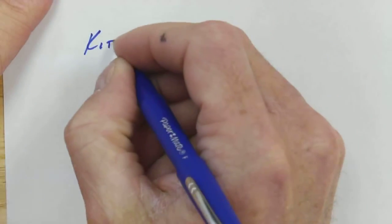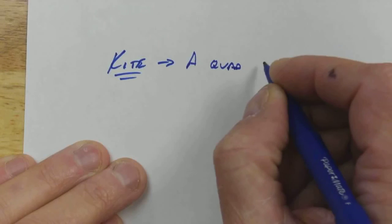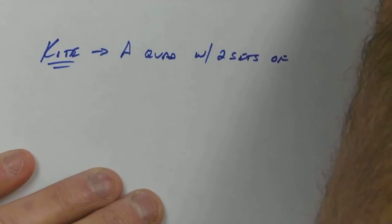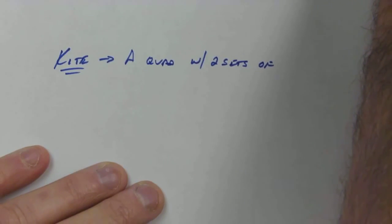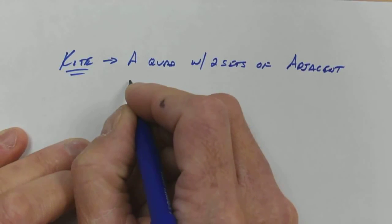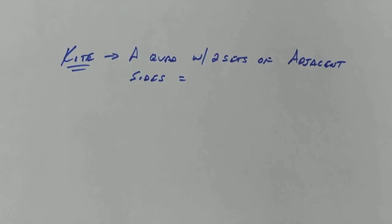Here we go, kites. Let's do our definition of a kite and properties of a kite. A kite is a quadrilateral with two sets of - what's the term we use to say two things are next to each other? Adjacent. Two sets of adjacent sides equal. That's my definition - that is a kite.